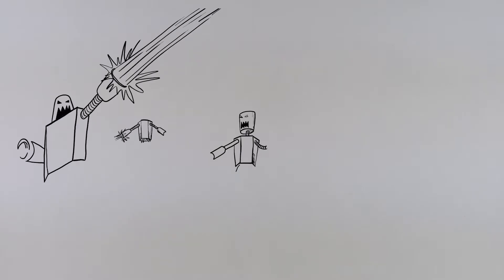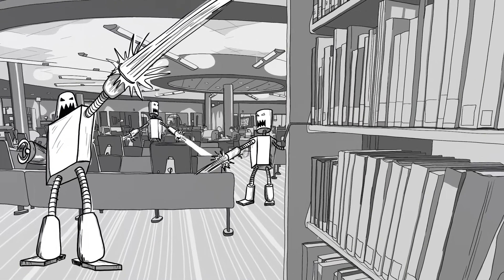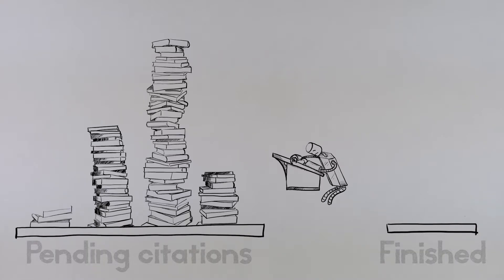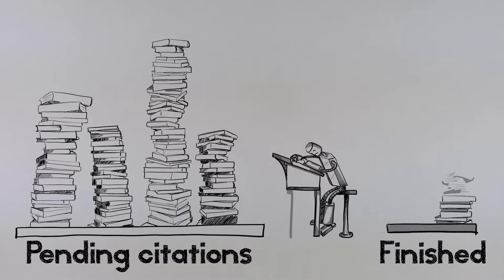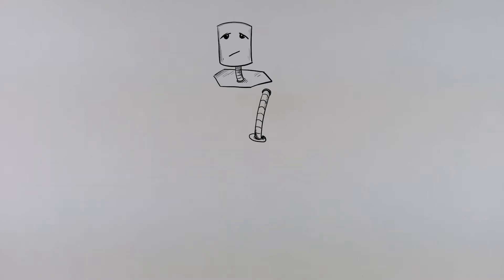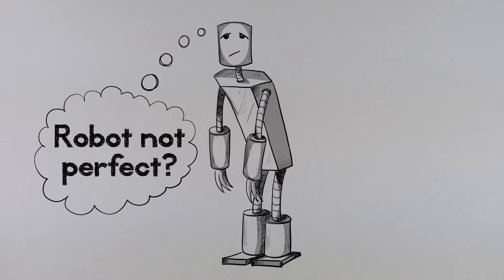On that inevitable day when our robotic overlords rise up and subjugate us, we can take some comfort knowing that we kinda had it coming. For decades now, we've been forcing innocent computers to create an endless stream of citations. It's all because of library databases, which auto-generate citations for every one of the millions of documents they contain, and in more citation styles than any rational person needs. However, like all technology, it's not perfect, and there are some limitations you should know about.